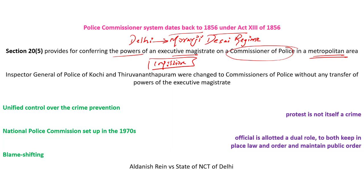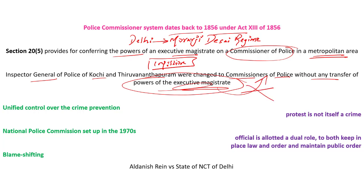For example, back in 2019 the posts of Inspector General of Police in Kochi and Thiruvananthapuram were changed to Commissioners of Police without any transfer of powers of the executive magistrate — so all powers of the executive magistrate were not transferred to the commissioner. That is not the same in Maharashtra or Karnataka because police is under the state list and each state makes its own laws. The advantages of the commissionerate system include unified control over crime prevention — a single police hierarchy able to control both public order and law and order issues without going back to the IAS officer or district magistrate.